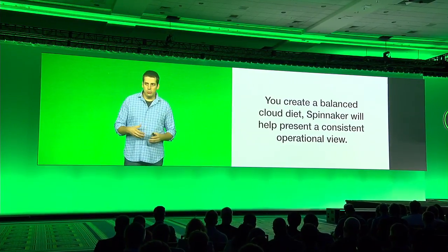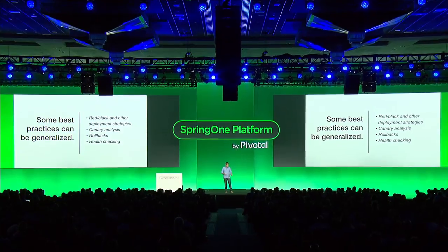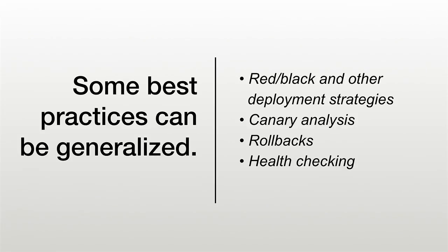Our hope is that you create a balanced cloud diet — that you use the best of each of these platforms, take advantage of the individual services they provide, and then use something like Spinnaker to present to you a consistent operational view and to leverage Spinnaker for its best practices. Some best practices can be generalized across cloud platforms, as hard as that sounds initially. I know Kubernetes feels very different from a VM-based public cloud, but some best practices can be generalized, and in fact some of those best practices are stronger with the generalization than they are on the individual platform.